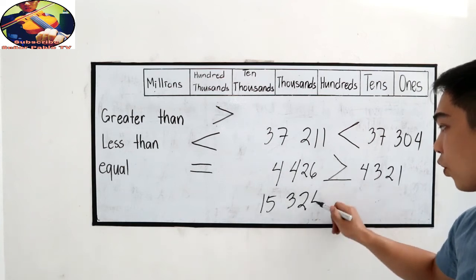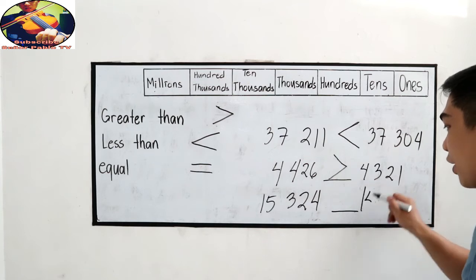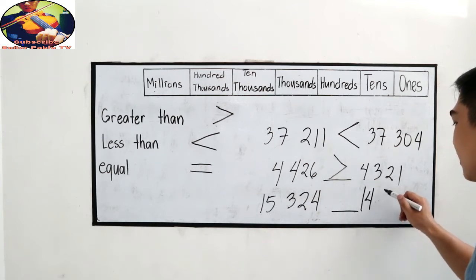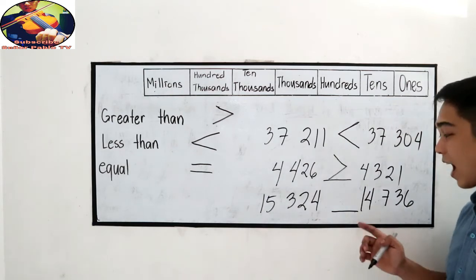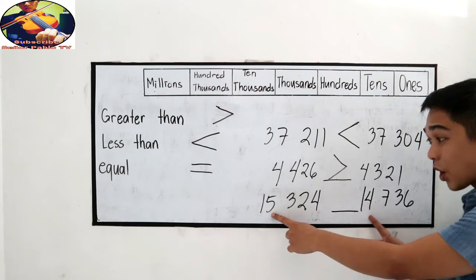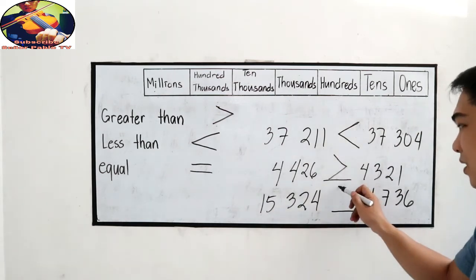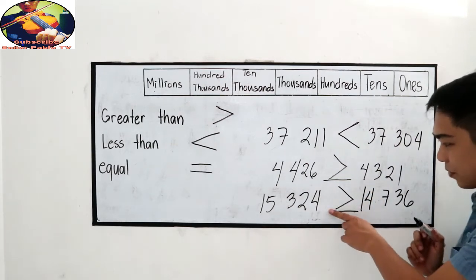15,324 compared to 14,736. Highest place value is 1. 5 and 4, which is greater? 5 is greater. So our symbol is greater than.